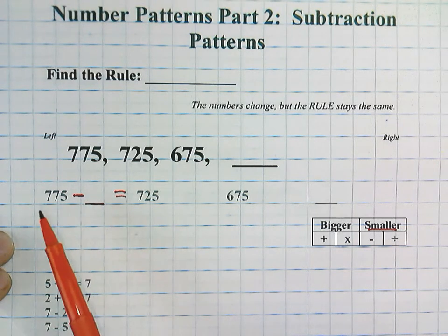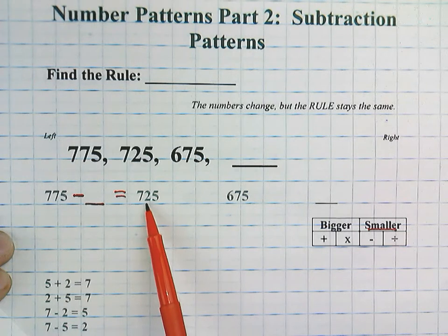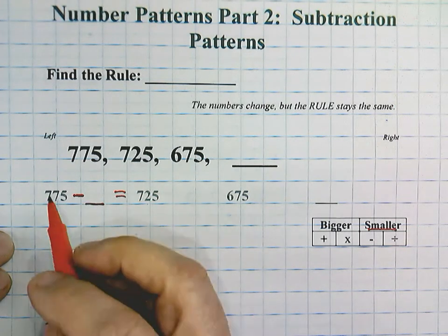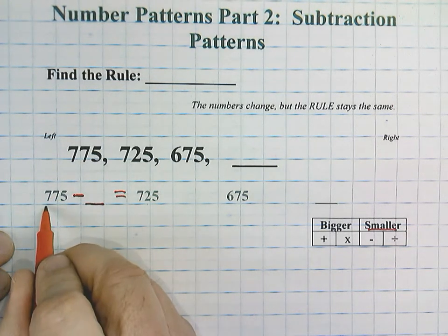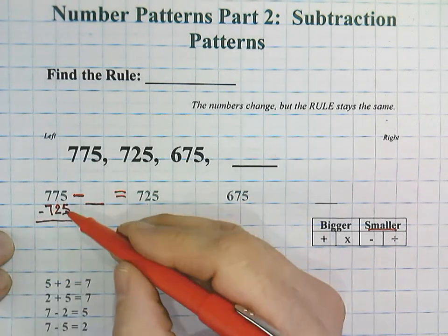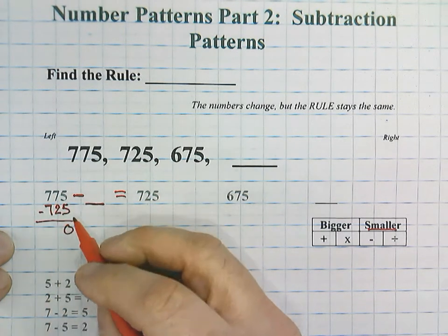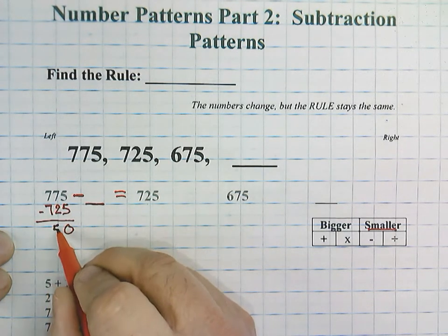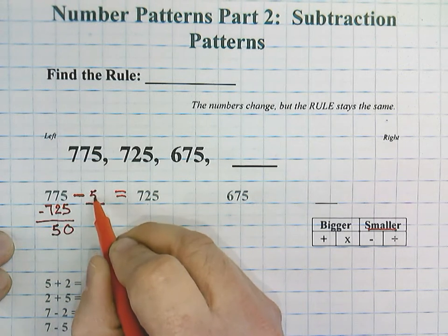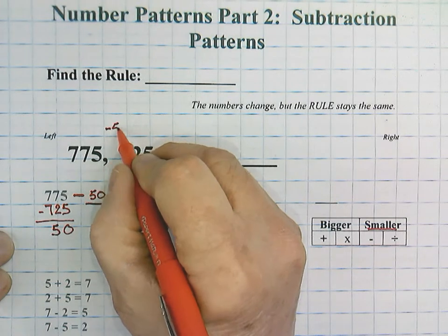What we're going to do is we are going to go 775 minus 725, so we're going to switch that. So, if we subtract 5 minus 5 is 0, and 7 minus 2 is 5, so we have a minus 50, which I'm going to put for my first rule.